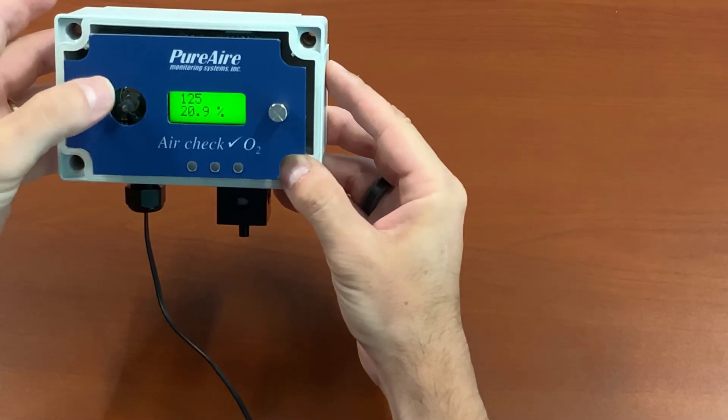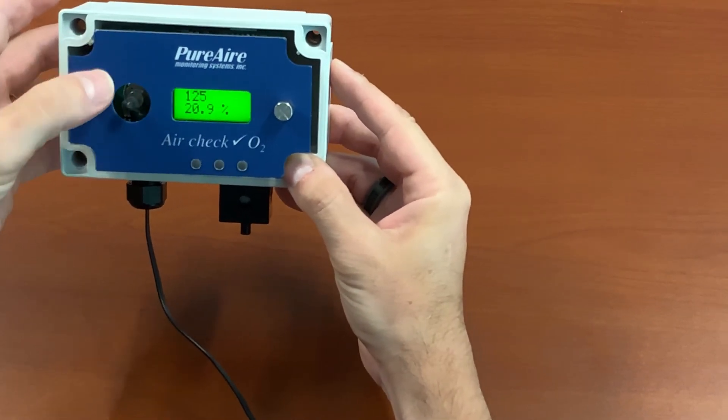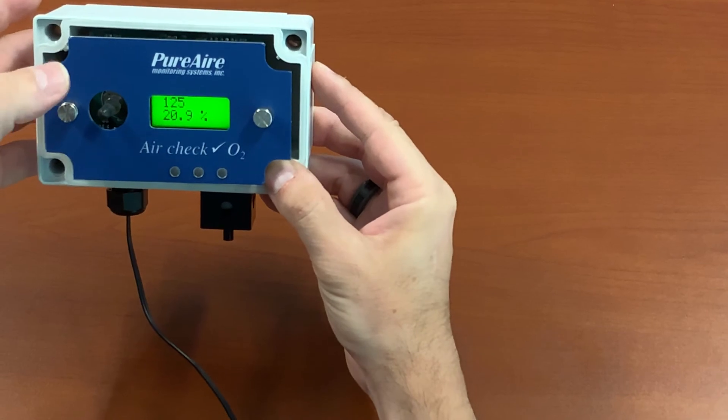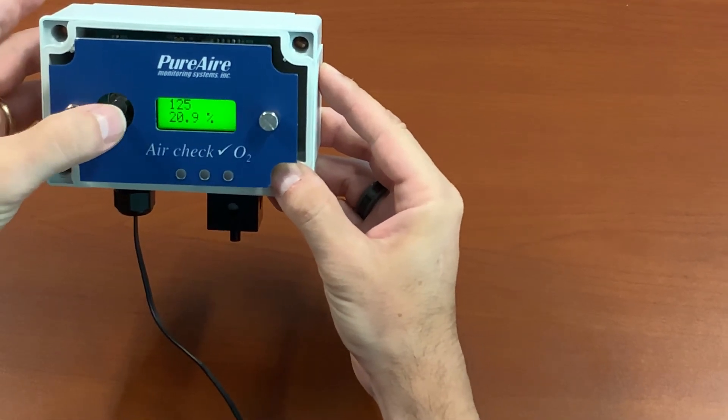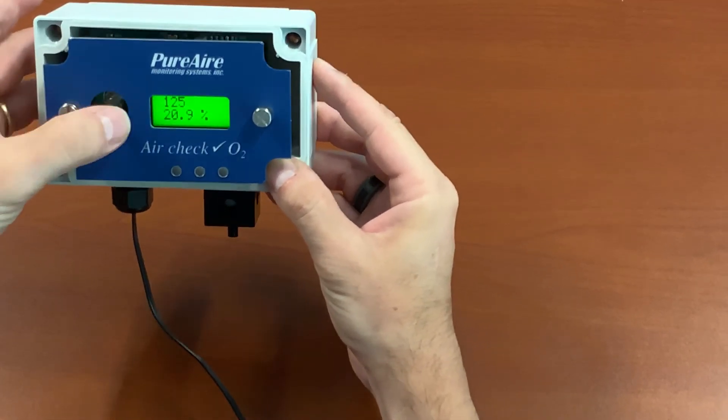At this point, you can either press straight in on the joystick to enter, or you can just exit out to the left. Either way, it saves that number in the memory, and you don't have to worry about it.